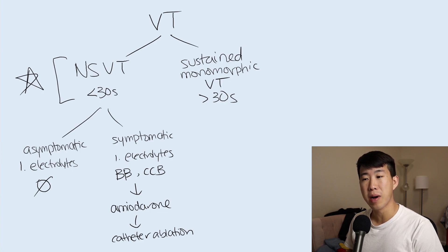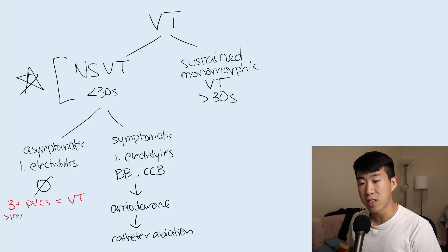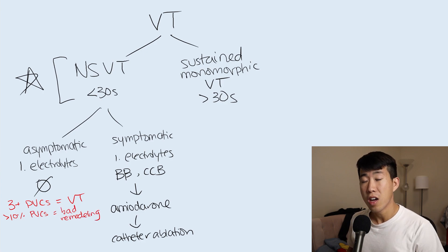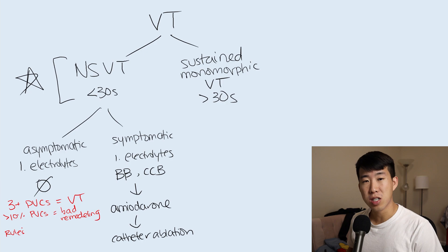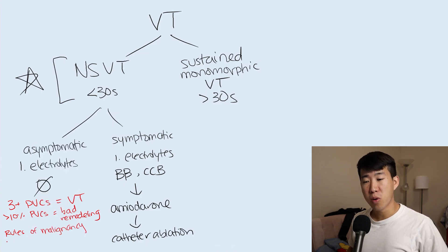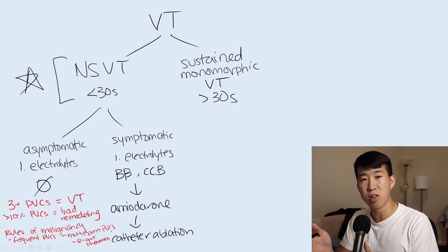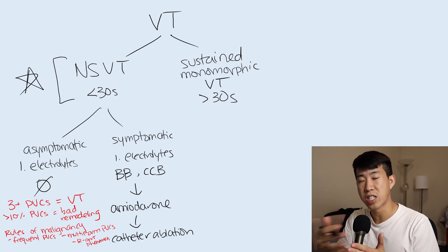A couple of notes on PVCs and VTAC: three or more consecutive PVCs is defined as VTAC. If greater than 10% of a patient's heartbeats are PVCs, this greatly increases the chance of deleterious cardiac remodeling, which may prompt intervention even if asymptomatic. There are also rules of malignancy predicting the chance of a PVC causing significant VTAC, including frequent PVCs, multiform PVCs originating from different foci, and the R on T phenomenon — when a PVC hits on the T wave of a normal QRS complex — which has a high propensity for generating a run of VTAC.